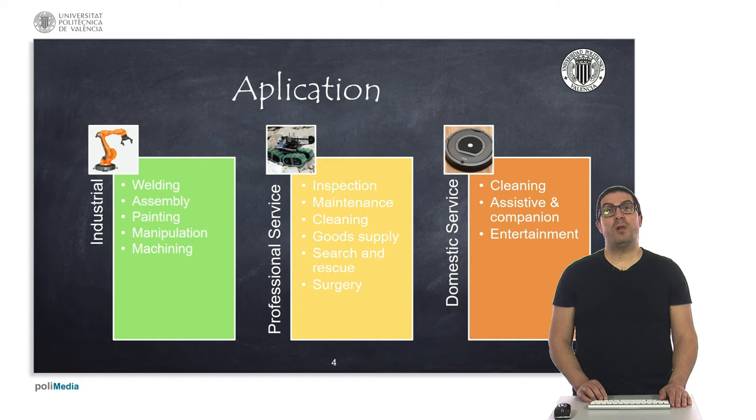There are multiple applications in robotics. Here, I highlight three main areas. This classification is not strictly as I presented here, but this is more or less what I believe a robot could be classified by their application. Robots are used in industrial environments in applications such as welding, component assembling, painting, object manipulation and machining among others.